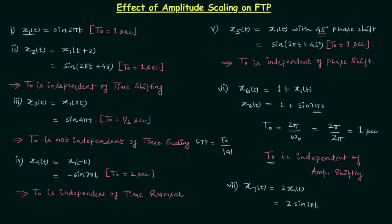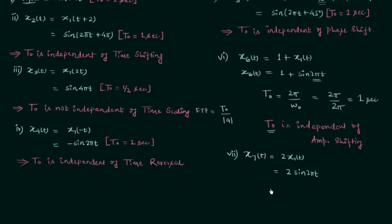And now we will find out the fundamental time period T0. It is equal to 2π divided by ω0. ω0 is 2π so we have 2π over 2π which is equal to 1 second.